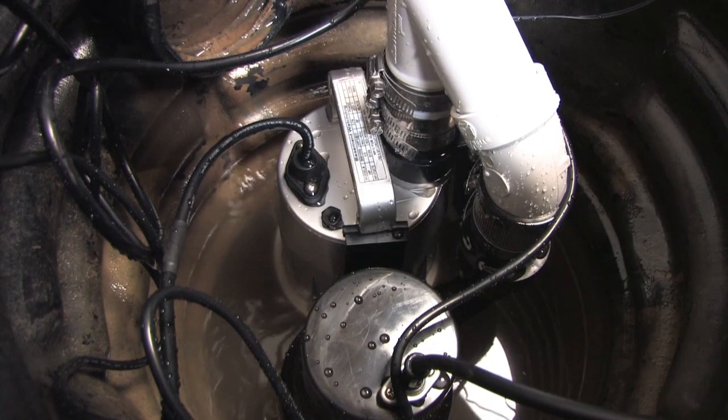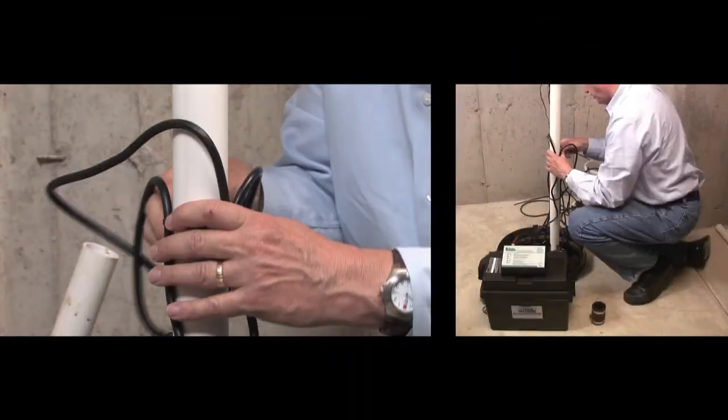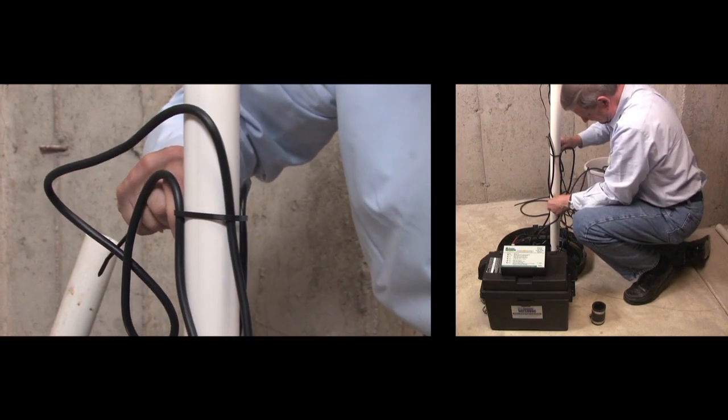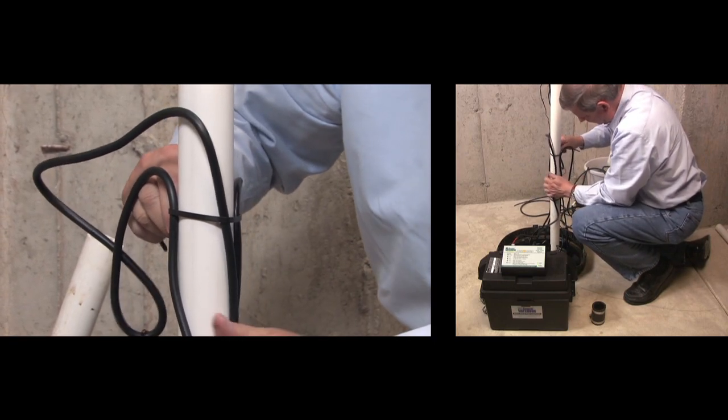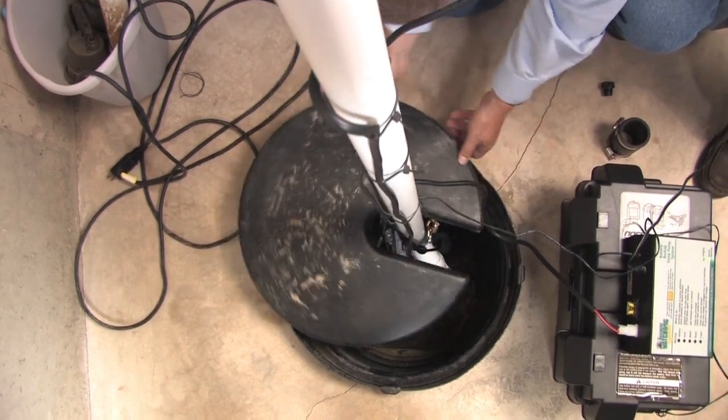At this point, both pumps are operational. For a neater installation, secure the cables from the controllers to the discharge pipe in a couple places. Make sure the wires are not touching each other or overlapping each other. The installation is now complete.